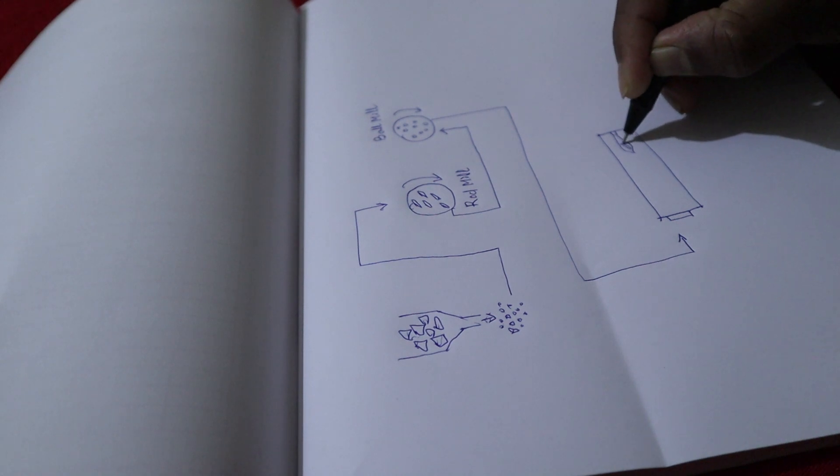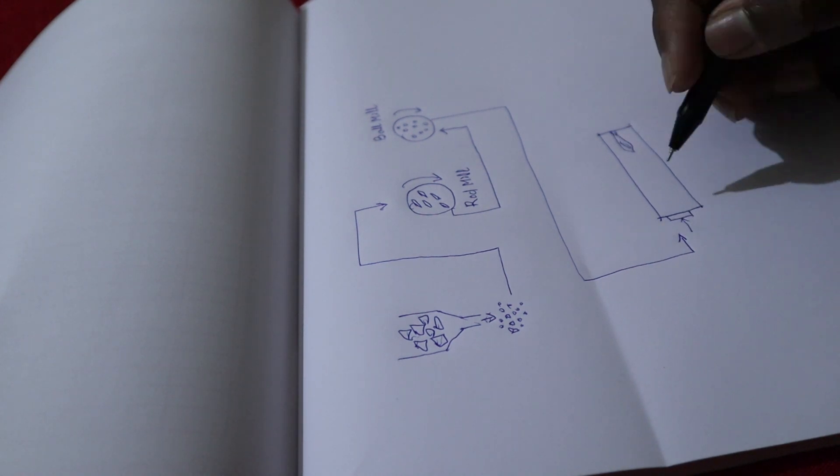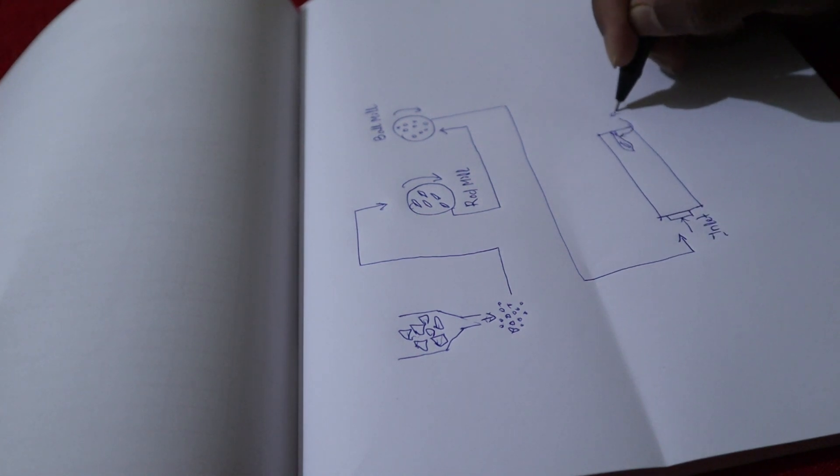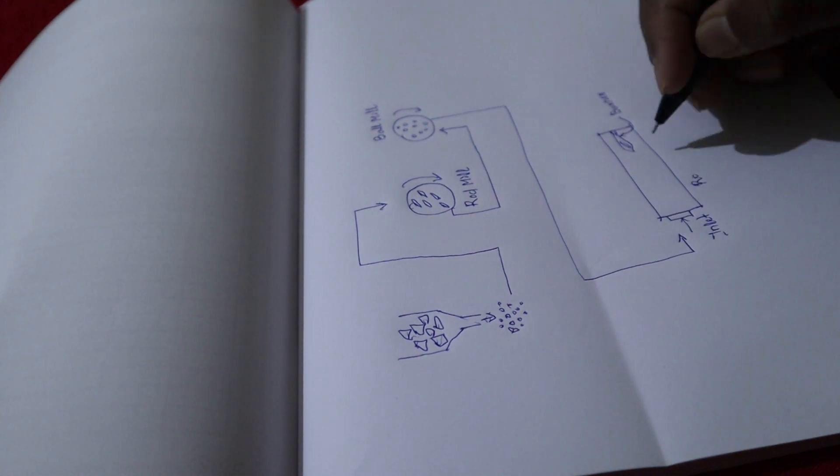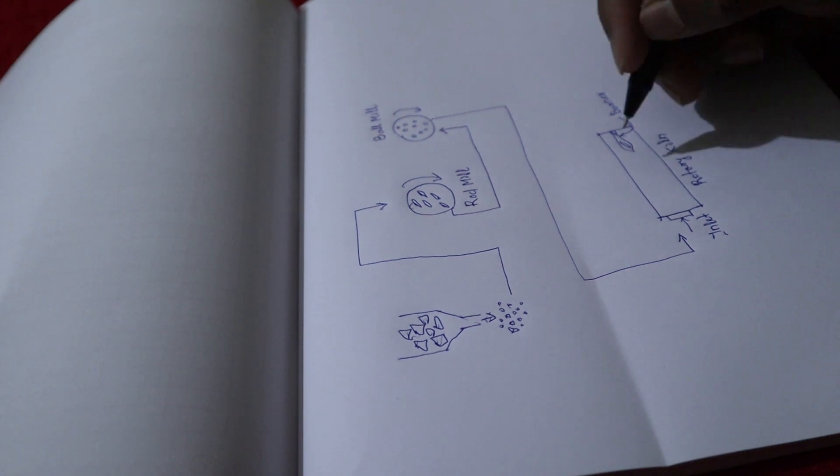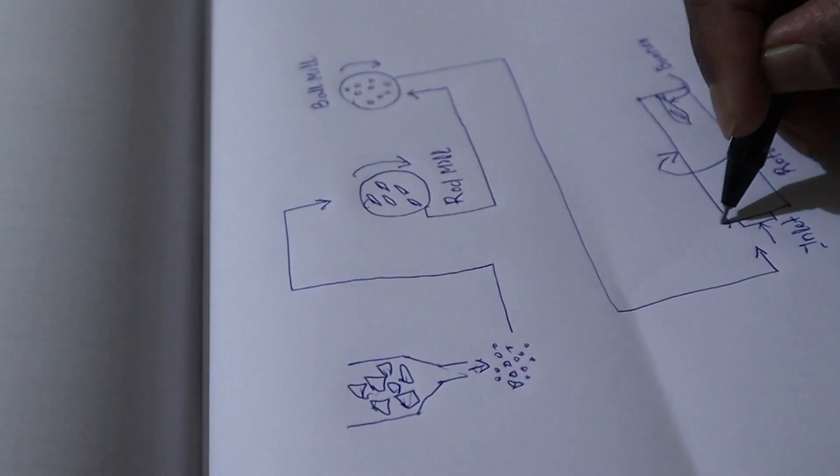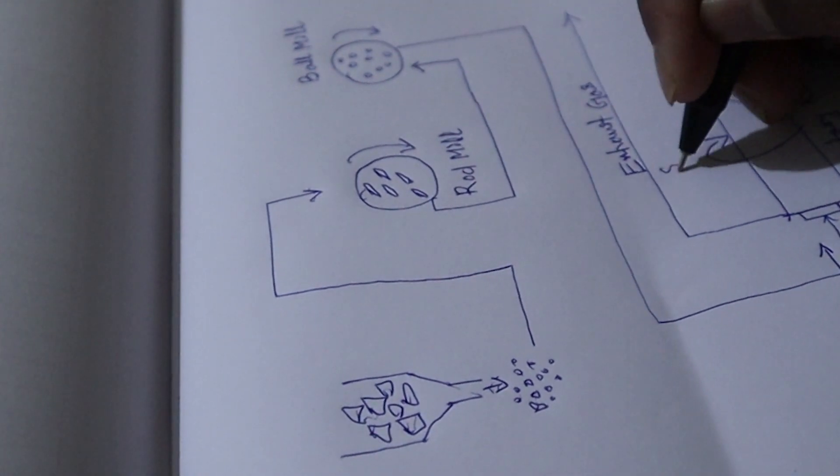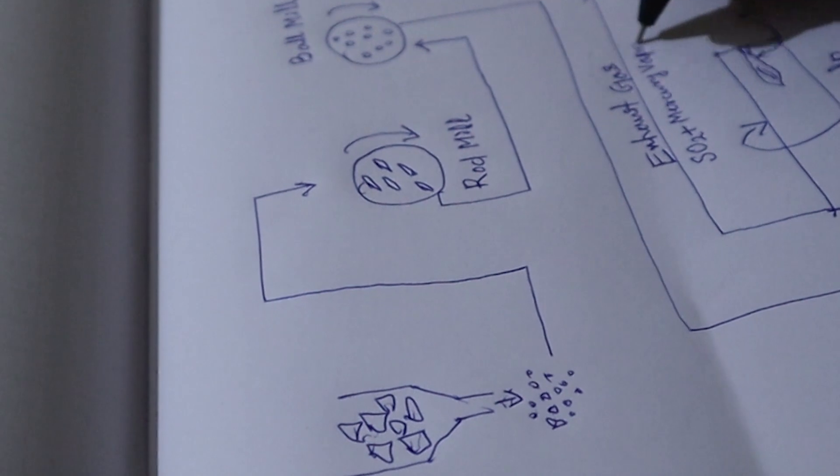The heated cinnabar reacts with oxygen in the air to produce sulfur dioxide, allowing the mercury to rise as vapor. This process is called roasting. The mercury vapor rises through the exhaust along with sulfur dioxide and water vapor.